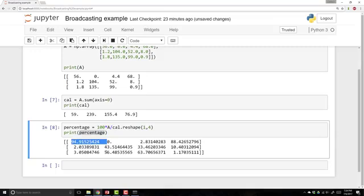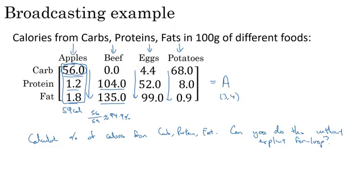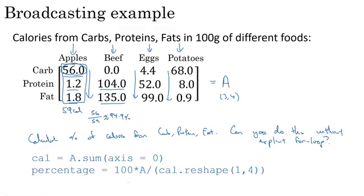Let's go back to the slides and repeat the two lines of code we had in the Jupyter notebook. The parameter axis equals zero means that you want Python to sum vertically — axis zero means to sum vertically, whereas the horizontal axis is axis one. So if you were to write axis one, you'd sum horizontally instead of vertically.